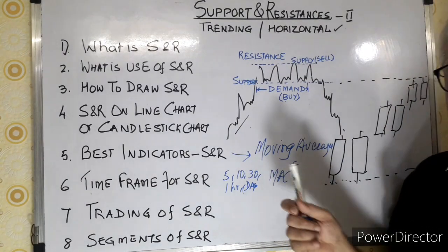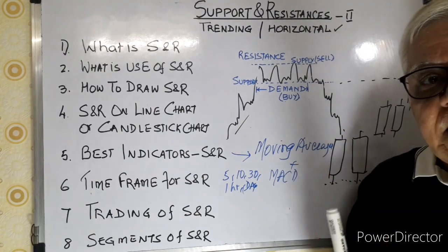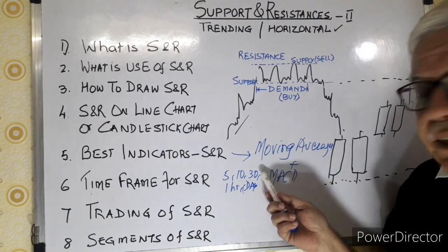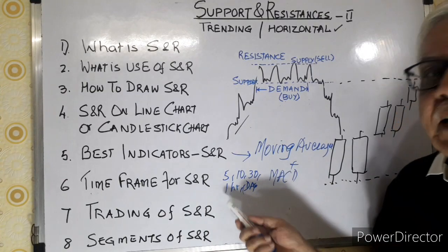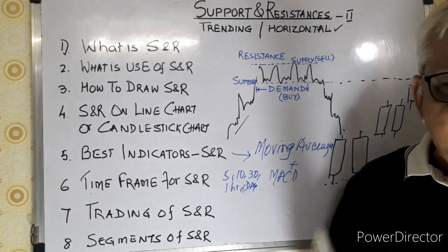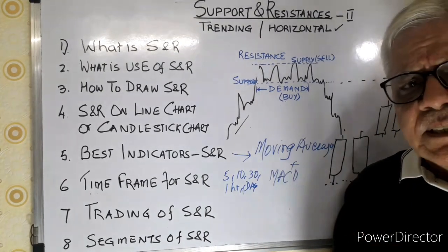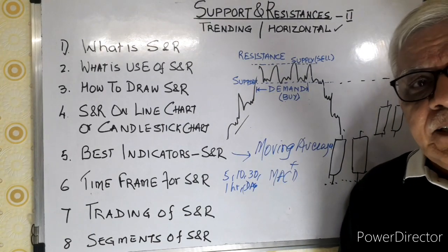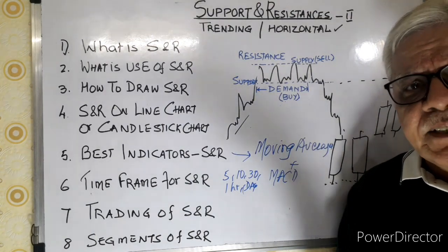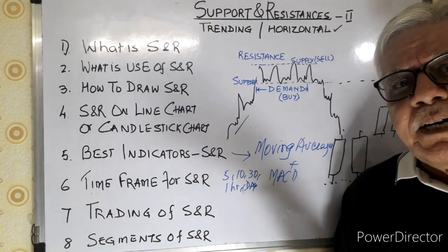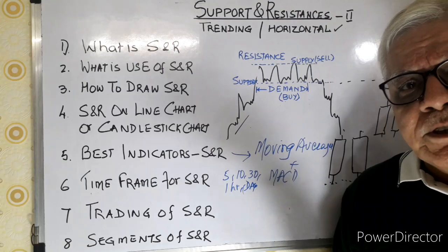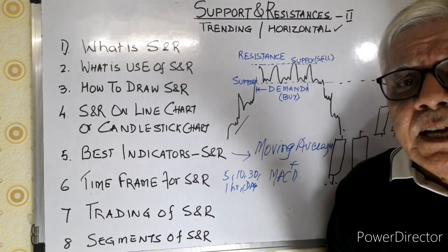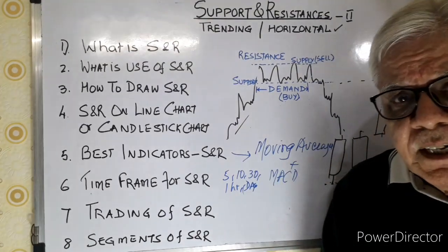I personally use 15-minute candles if the stock is very volatile, generally 30 minutes for intraday, and sometimes even 1 hour. With 1-hour candles there will be only about six candles in a trading day, so intraday may not always be possible — but positional trading is excellent with this timeframe.